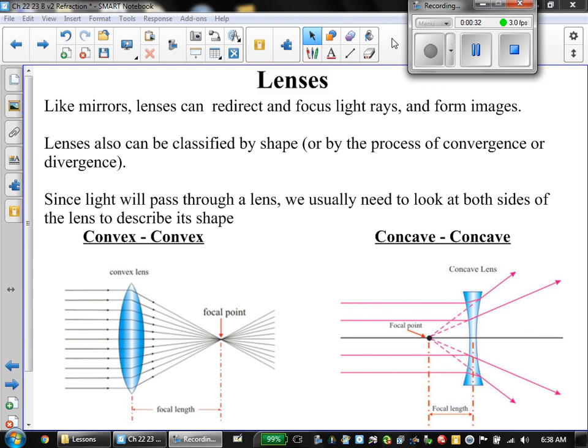If we formed an image behind the mirror, we said the image distance was negative, the height of the image was negative. If we use the focal point behind the mirror, then we had to make that negative.